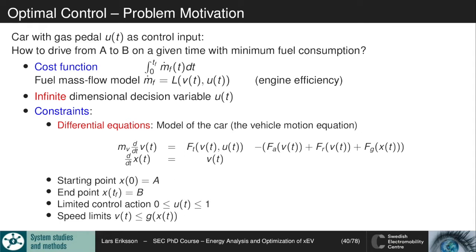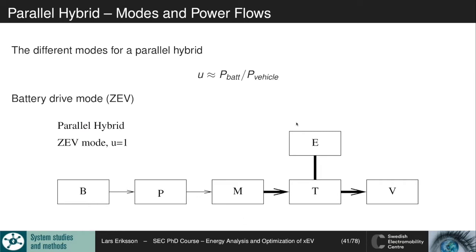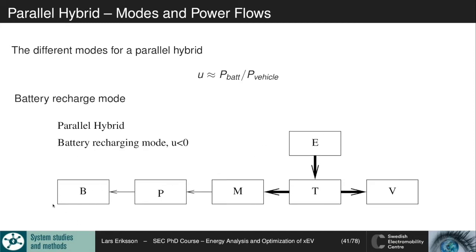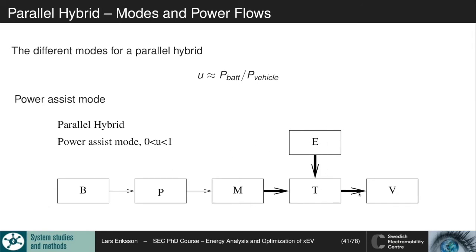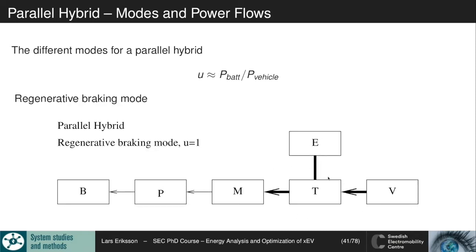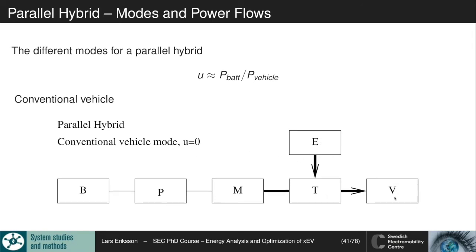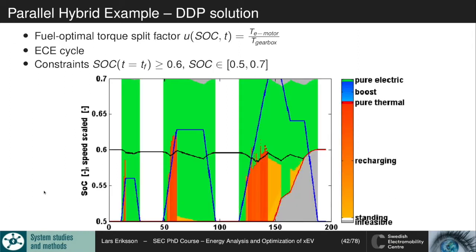We have gone into the parallel hybrid with the different modes and will look at how to control it with respect to the power delivered from the battery in relation to the power requirement of the vehicle. We look at the different modes: zero emission vehicle mode where we run all electric, battery recharge mode when we're recharging the battery, power assist mode when we're boosting with the combustion engine using additional electricity, regenerative braking, and conventional vehicle mode. With the toolbox you have received in the course, you can now solve these problems and analyze the optimal behavior over the cycle.